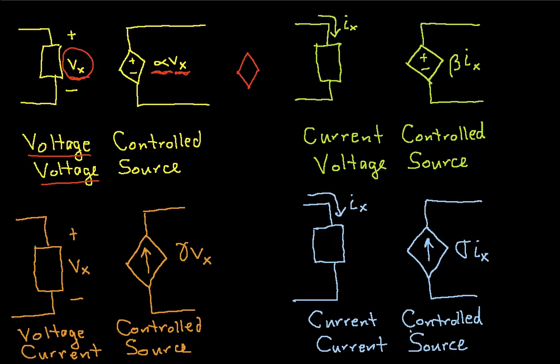Another type is the voltage controlled current source. You monitor some voltage in the circuit, and the source provides a constant gamma times that voltage as a current. This model is often used with transistor models. The current controlled voltage source monitors some current in the circuit, and the output is a voltage proportional to that current with proportionality constant beta. This turns out to be the model of a bipolar junction transistor — in fact, when you look at the spec sheet for a BJT, you'll sometimes see beta listed there.